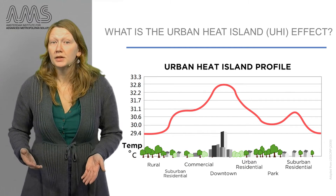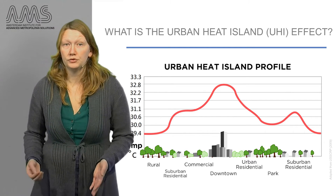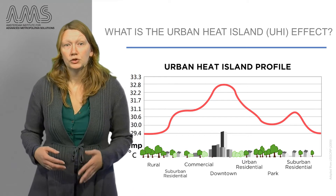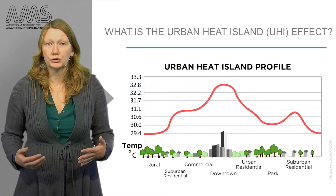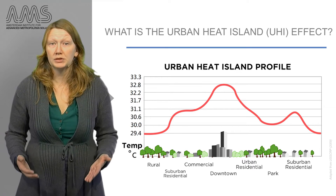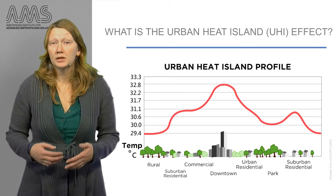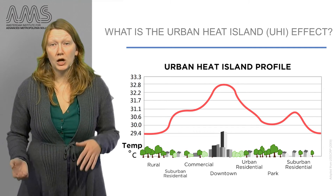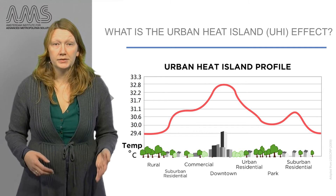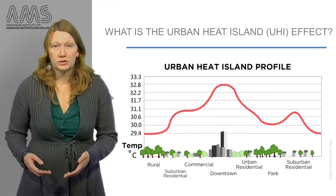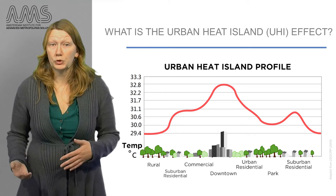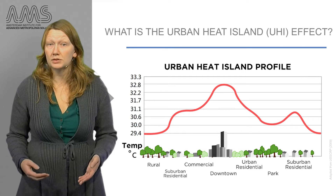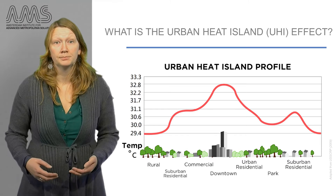The urban heat island is most pronounced during the evening and night. During this time, the air temperature over the metropolitan landscape can show large differences. During calm and clear nights, these air temperature differences between the urban and rural area can easily reach up to eight degrees Celsius.